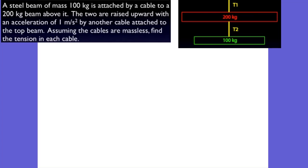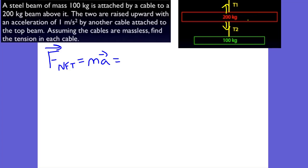We have two different objects here. These objects don't know about each other. If we think about what's happening with that top object, we can say the net force is always equal to ma. That net force is always equal to mass times that vector of acceleration. That 200 kilogram mass has a tension one going up and a tension two going down. It doesn't know that the 100 kilogram mass is there — all it knows is that it's being affected by tension two. There's also the force of gravity on this object.